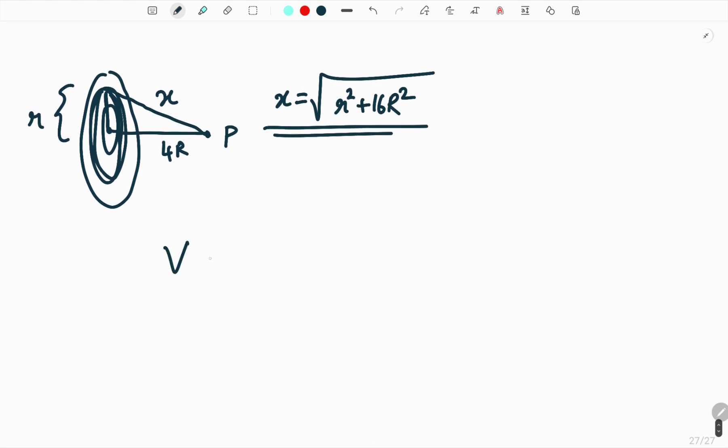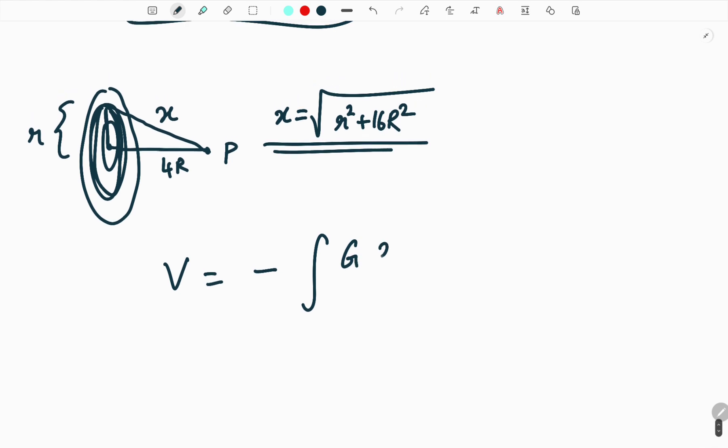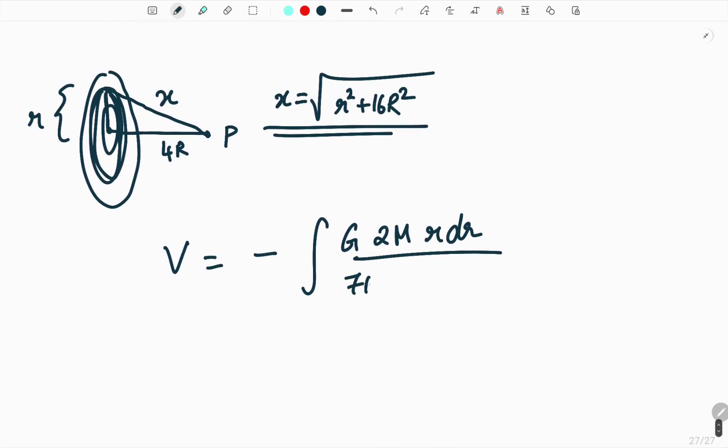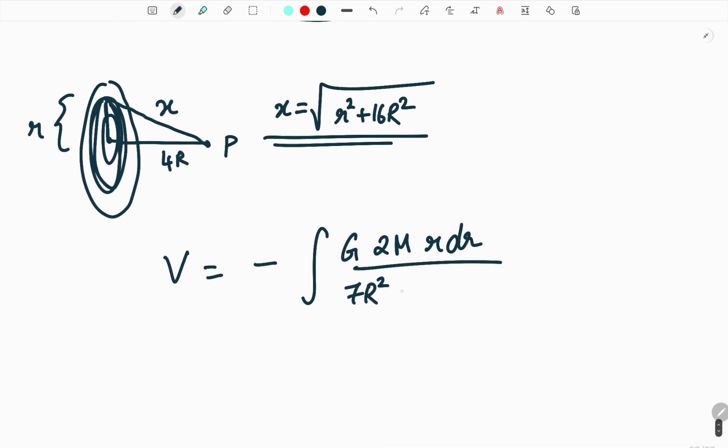So substituting all this in our equation we know potential is equal to minus integral of capital G into dm. So what is dm? 2 into M into r dr divided by 7r square by x. So x is square root of small r square plus 16r square.